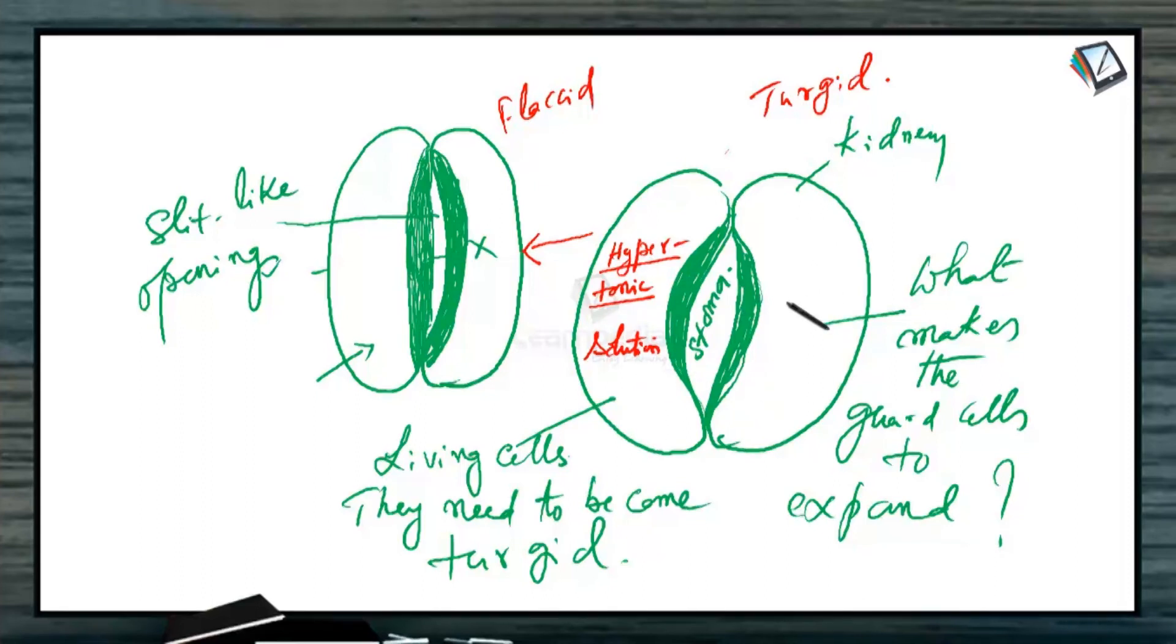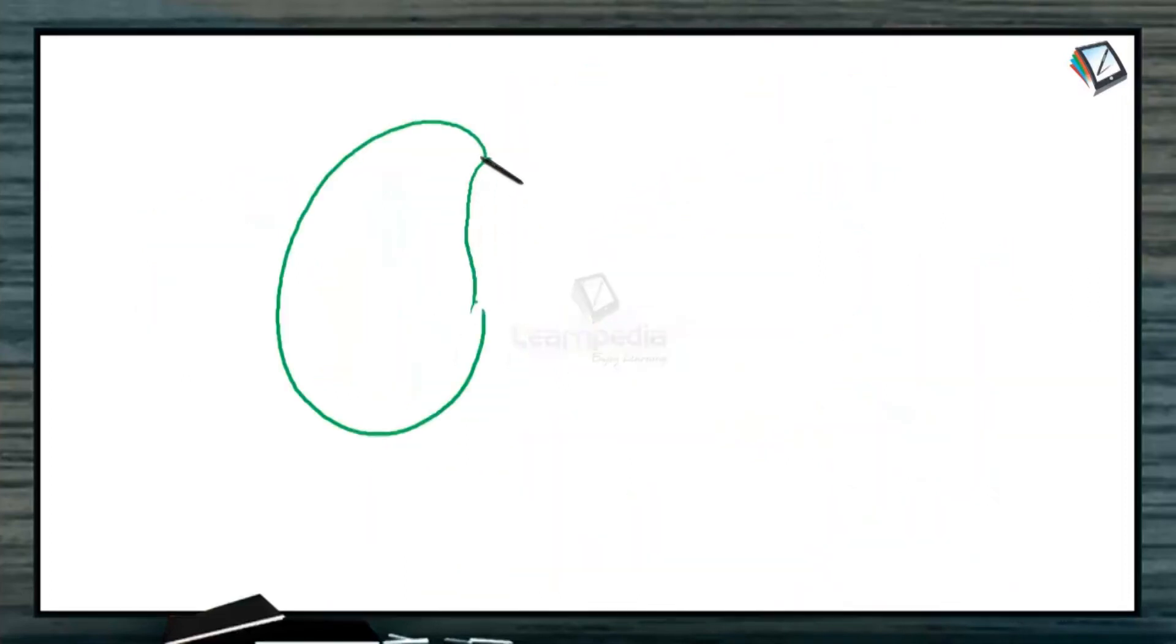For expansion, they need to become turgid. And to become turgid, they should have hypertonic solution. And now, what makes the cell sap to become hypertonic? This question we should answer.